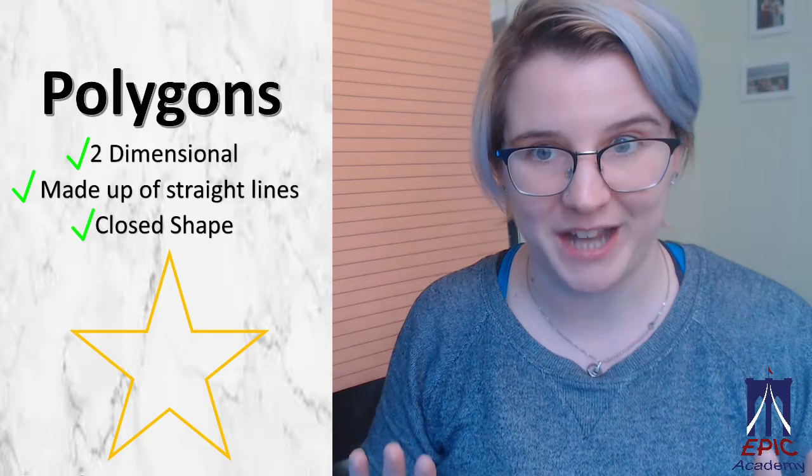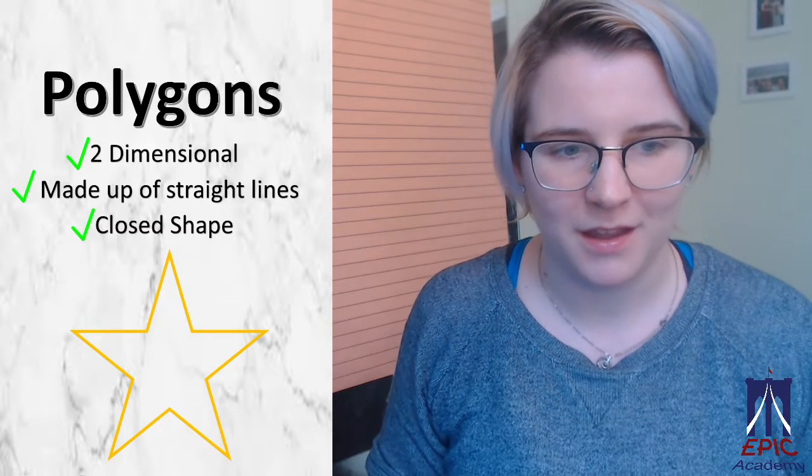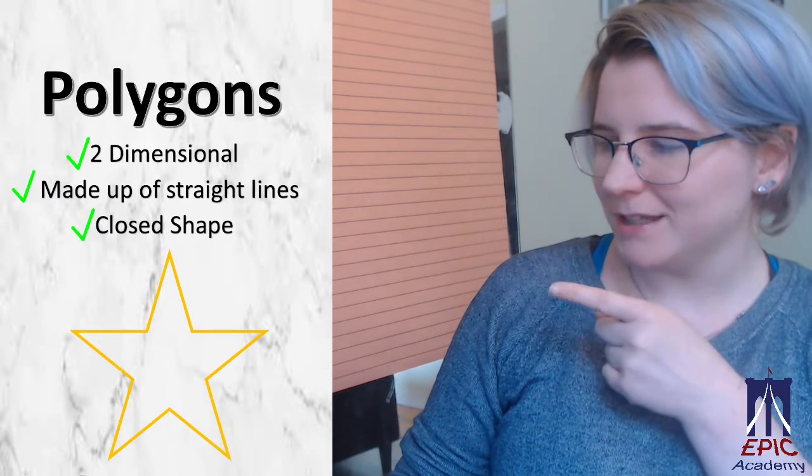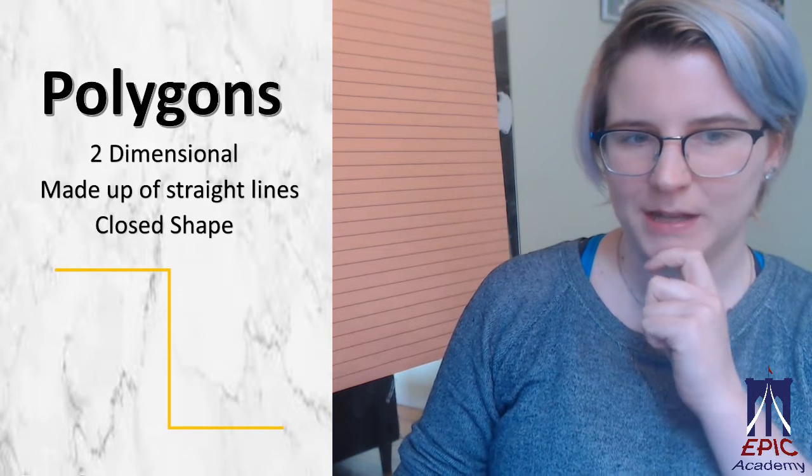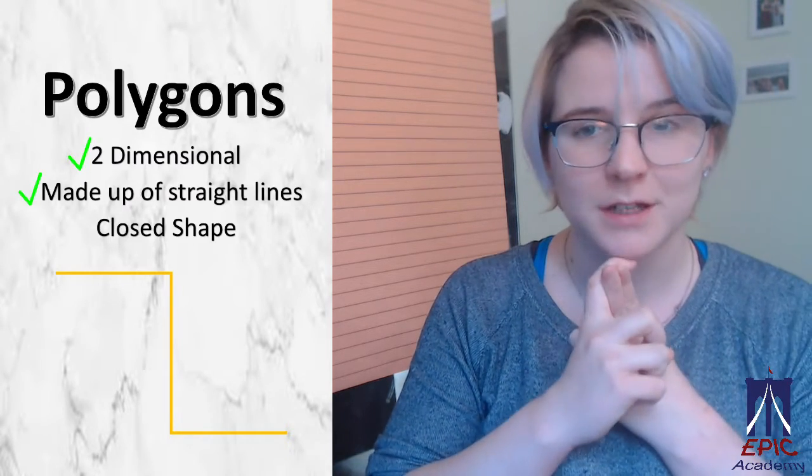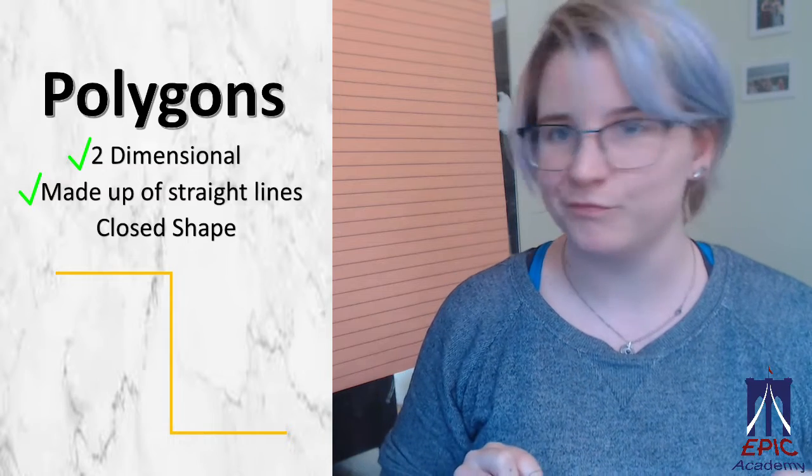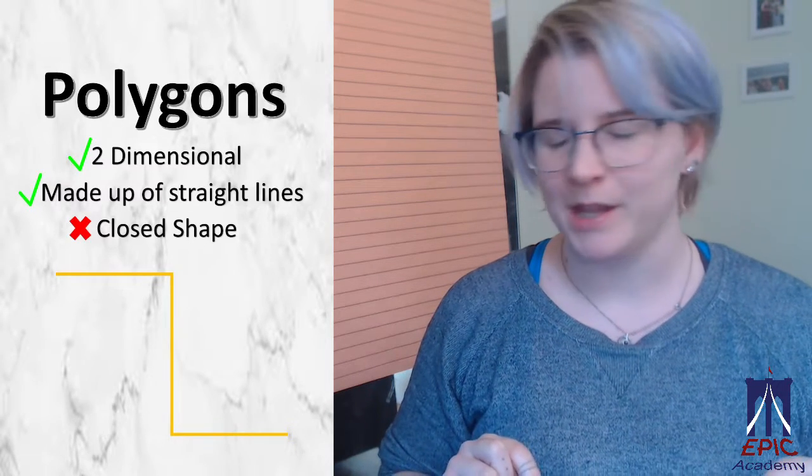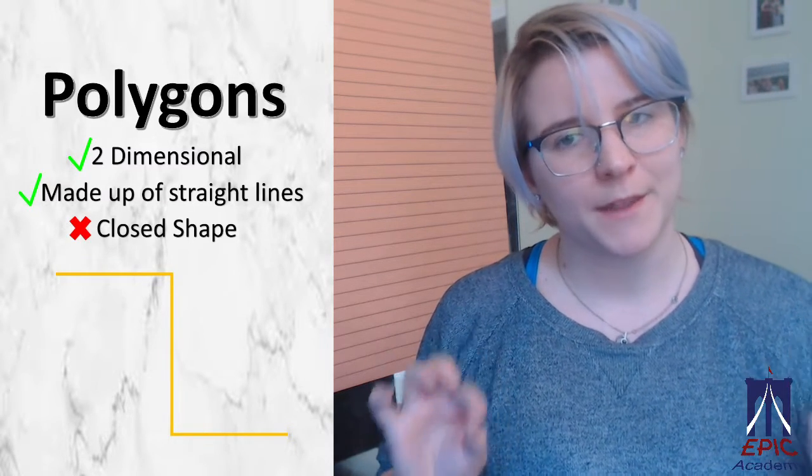Alright, last one. Last one we're gonna do together. Are you ready? Polygon or no? Okay. Let's go through our checklist. It is two-dimensional. It is made out of straight lines. Is it a closed shape? We need all three of those things. So this? Not a polygon.